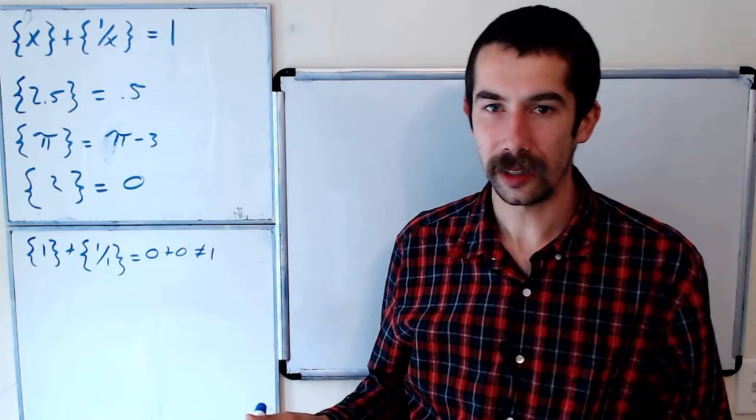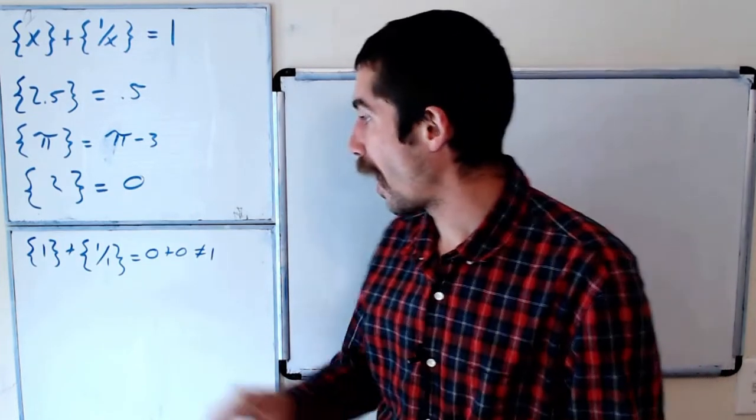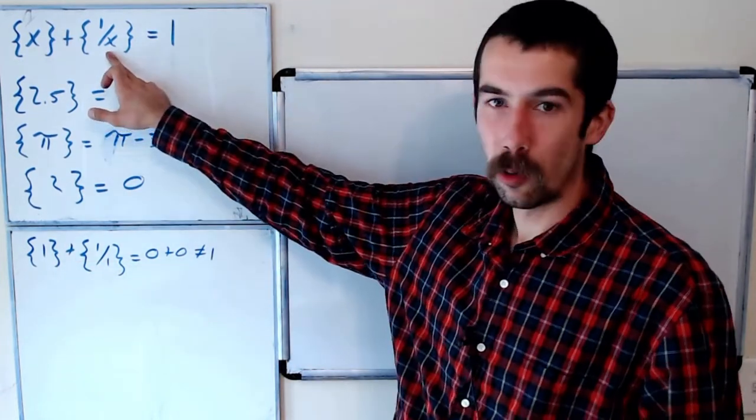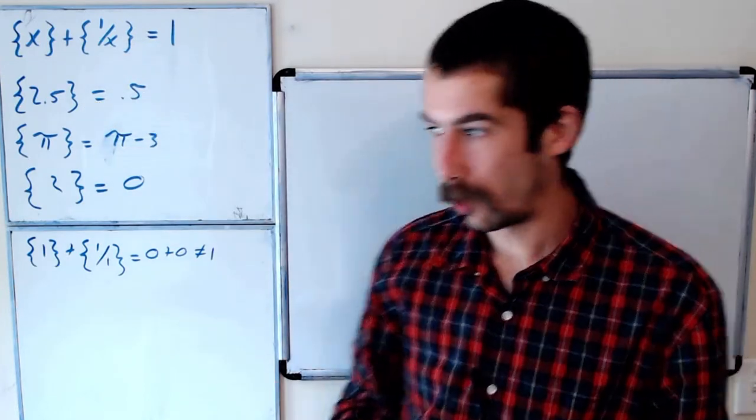So without loss of generality we could assume that x is greater than 1 meaning 1 over x would be less than 1.